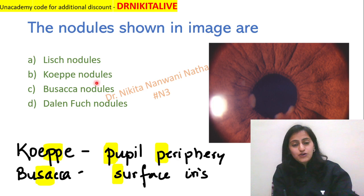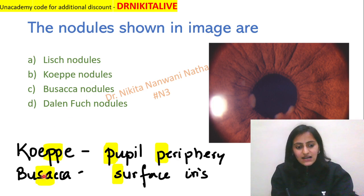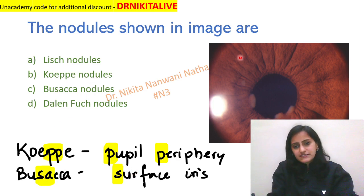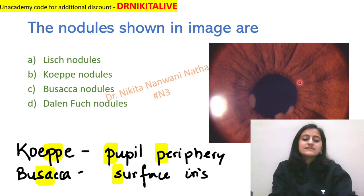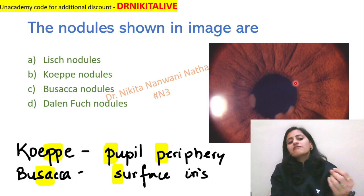So the answer to this question is Coppase nodules. Basakas — the S is on the surface, in the mid or the periphery of the iris. That is, the surface of the iris is where we have Basaka nodules.